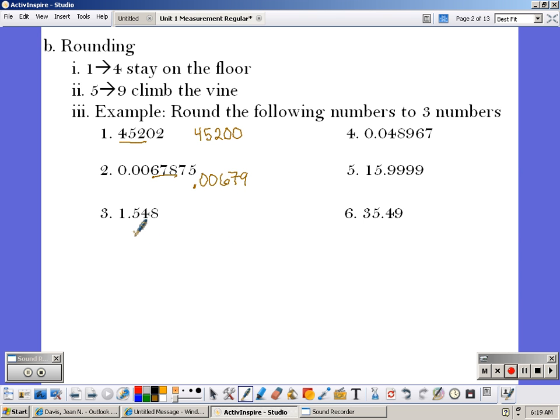In example three, we have 1.54. The fourth number is eight, so we're going to round the four to a five. So it's 1.55.